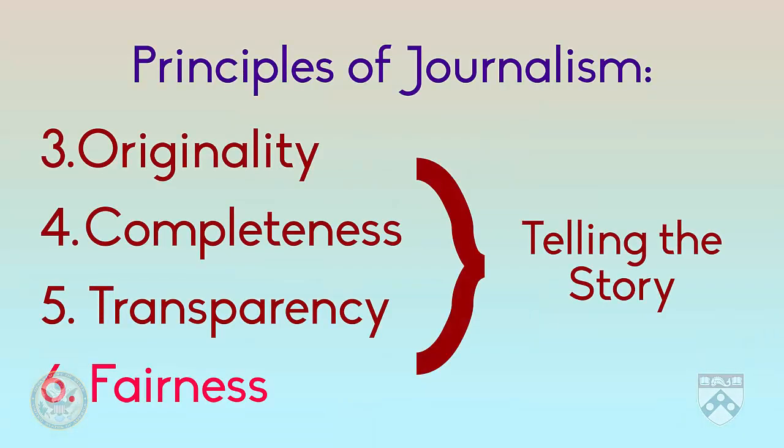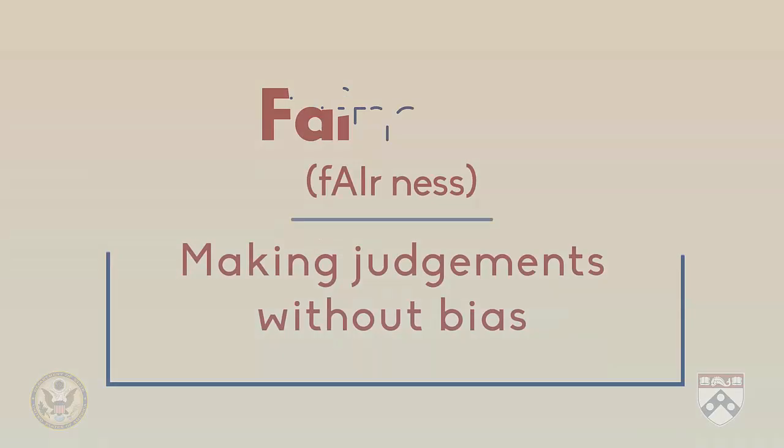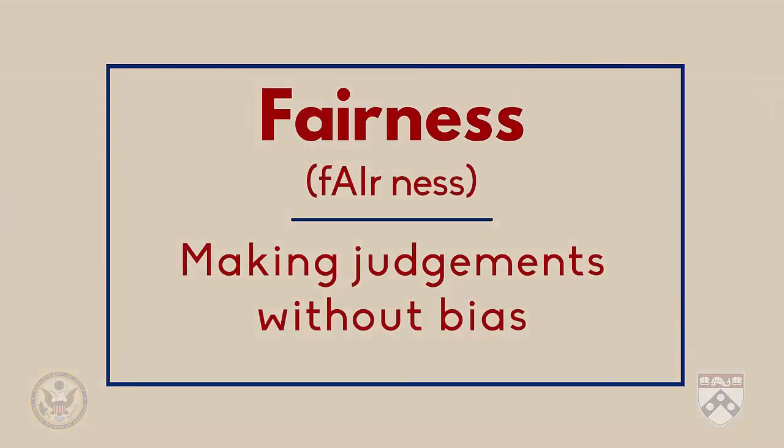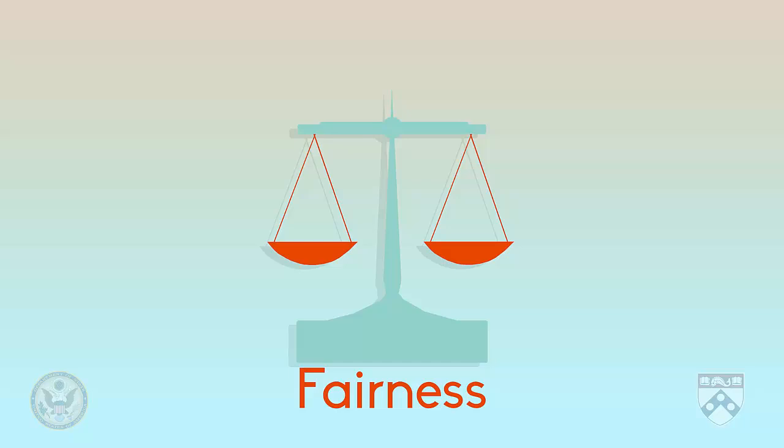Lastly, when a journalist writes an article, they must think about the principle of fairness. This means that a journalist must think about the language they use in their article, to make sure they accurately tell the facts without bias, favouring one side or another. In the hospital example, they should use language that tells the facts about the advantages and disadvantages of building the hospital. It's important to remember that a journalist's goal should be to inform the public and tell them what they need to know, not manipulate them.